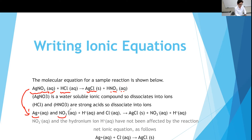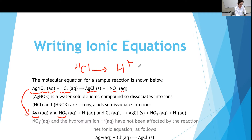Nitrate is a 1− charge and silver is a 1+ charge — they cancel. When you write the formula for silver nitrate, you switch the charges, and when you dissociate it, you give the charges back to the metal and the polyatomic ion. HCl, when you dissociate it in water, changes to H+ and Cl−. If it is Aq, that means water has been added to HCl, so we have H+ and Cl−.